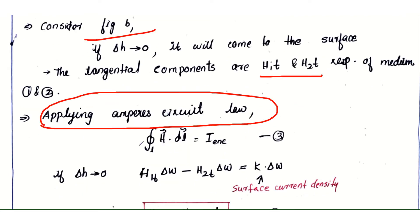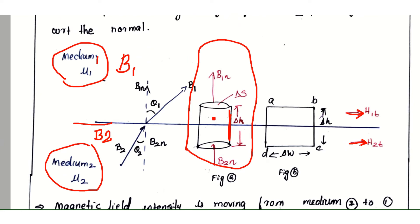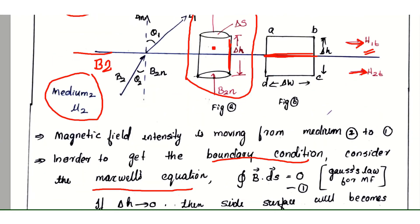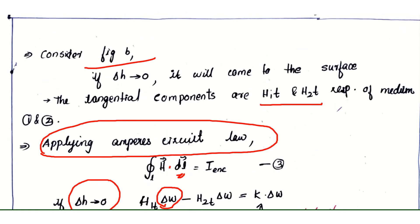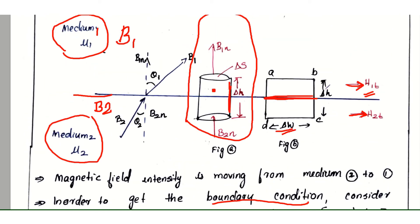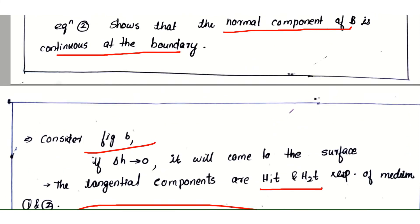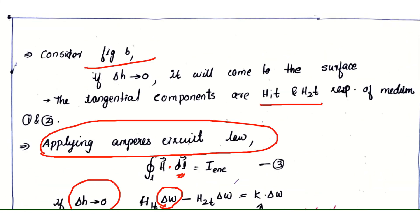Applying Ampere's circuit law, ∮H·dl = I_enclosed. If Δh → 0, H₁ₜΔw - H₂ₜΔw = k·Δw, where k is the surface current density.